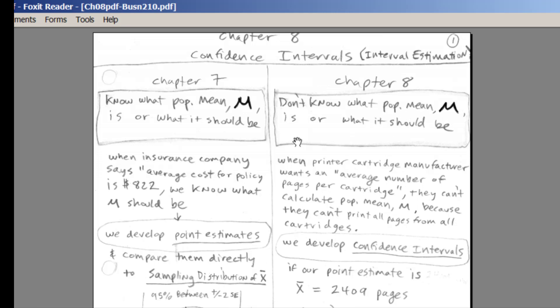Let's go to our next page here. So in chapter 8, we don't know what the population mean mu is. Let's look at another example, printer cartridge manufacturer example, that will help us kind of think of situations when we really can never calculate mu.